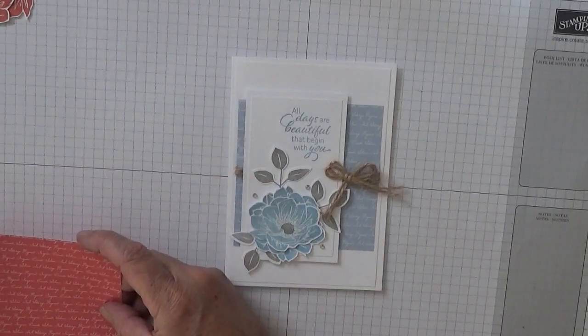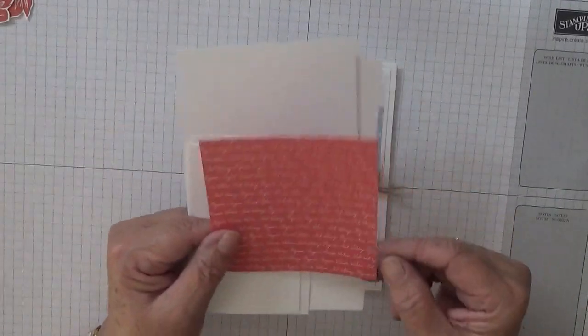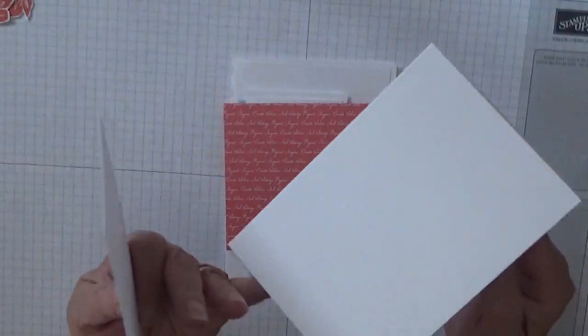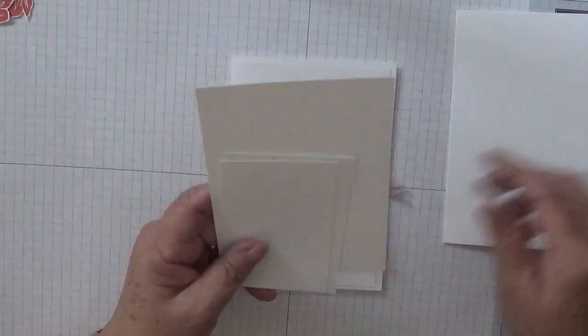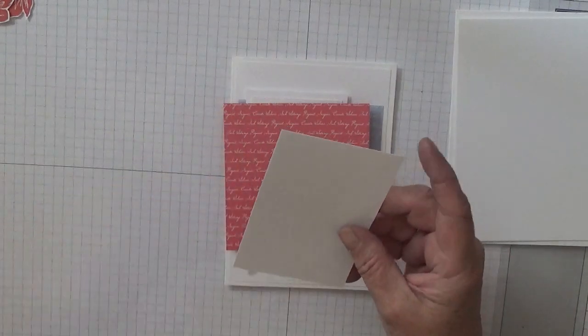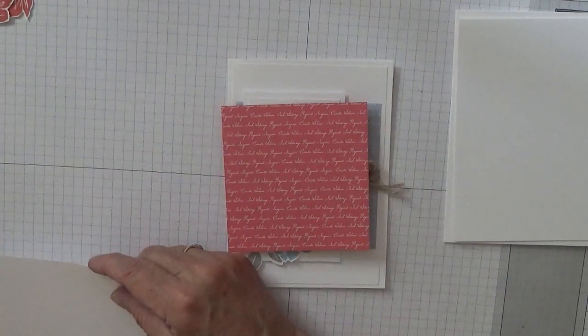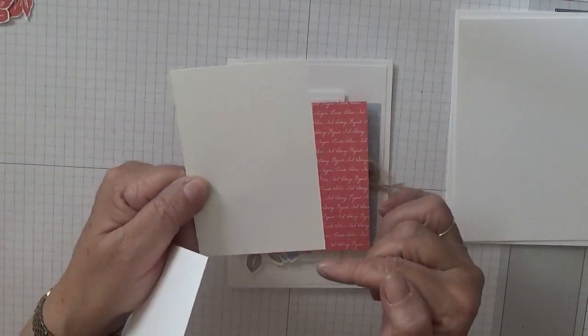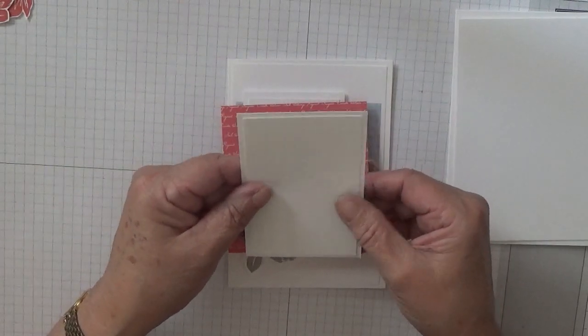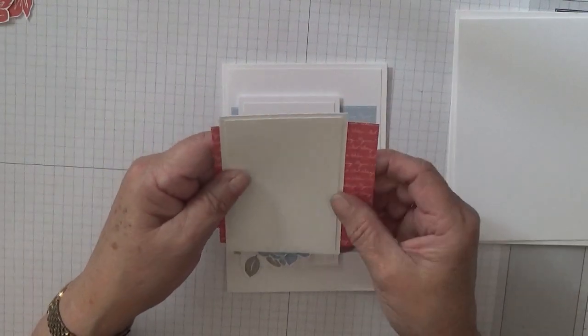I have a piece of 3 and 5/8 by 3 and 3/4. I have a card base of 8 and a quarter by 5 and 7/8 scored at 4 and 1/8 and folded in half. I have a piece of white card stock at 5 and 5/8 by 3 and 7/8 for the front and I have a piece of card stock at 2 and 3/4 by 4 and 1/4. And then I have another piece at 2 inches by 4 inches, just for decoration really. And that will sit on over the top of the DSP.